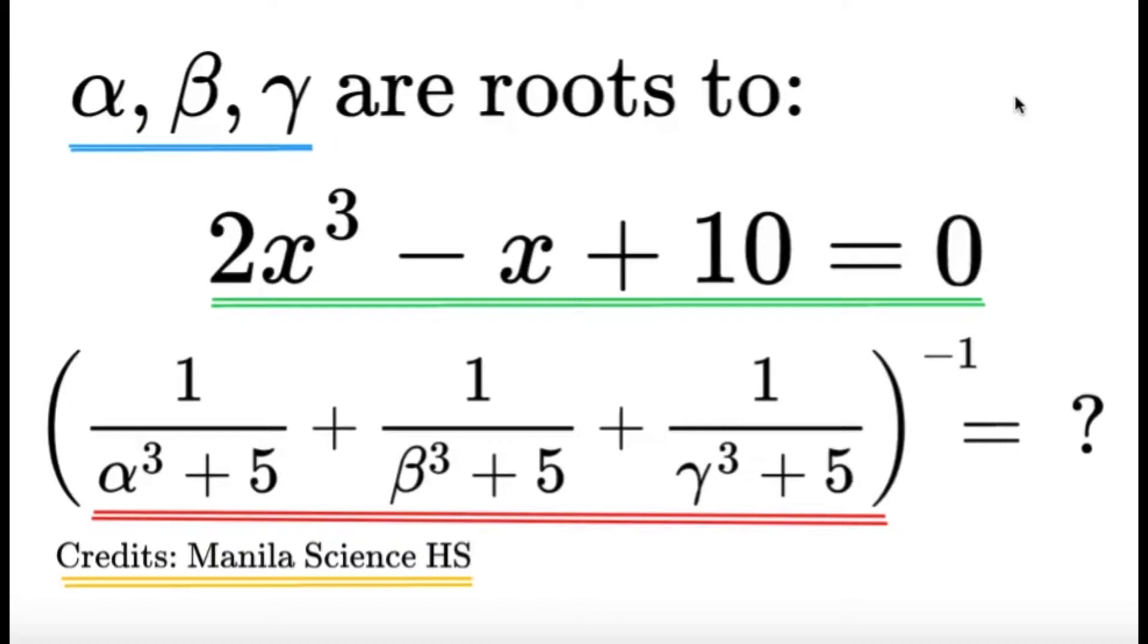Alpha, beta, and gamma are roots to the following cubic equation: 2x cubed minus x plus 10 is equal to zero.